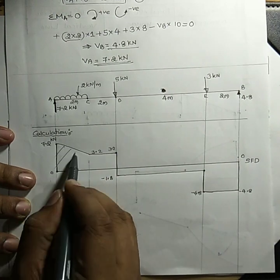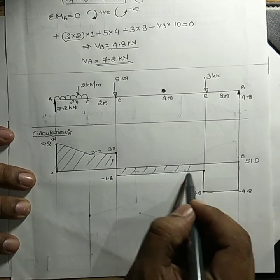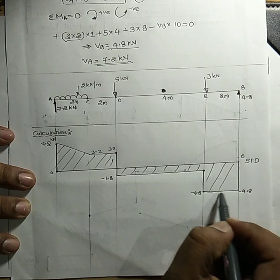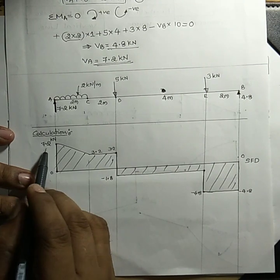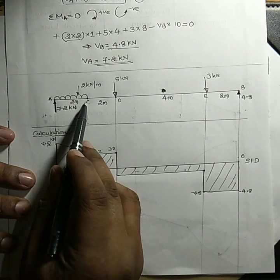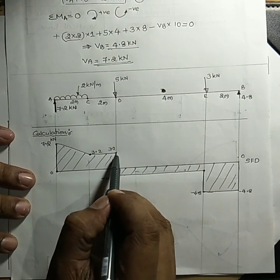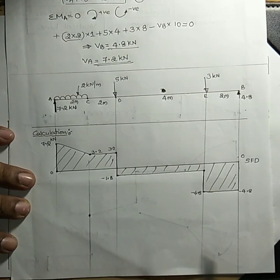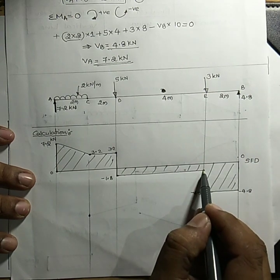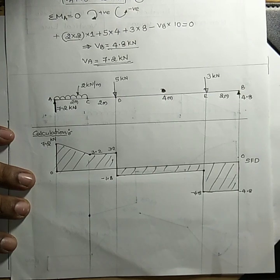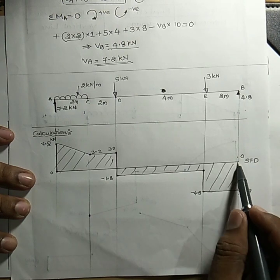At B there is an upward force of 4.8 kN, so −4.8 + 4.8 = 0, closing the diagram. Summary: SF at A is 0 and 7.2; at C is 3.2; at D is 3.2 and −1.8; at E is −1.8 and −4.8; at B is −4.8 and 0.